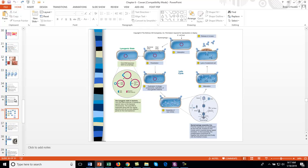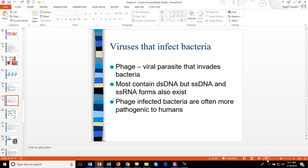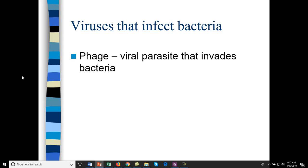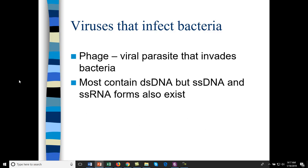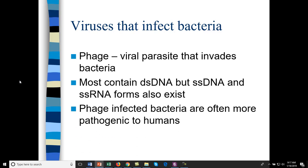We're talking about phage — phage are just viruses that infect bacteria. If you look at phage, they have a more complex capsid structure and they come in different forms: some are DNA viruses, some are RNA viruses. When they infect bacteria like streptococcus and staphylococcus, they often make those bacteria more pathogenic to humans because they donate genetic material for pathogenicity directly to the bacteria.